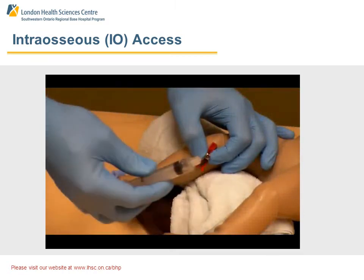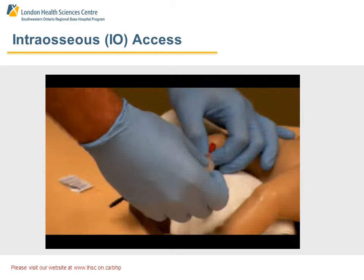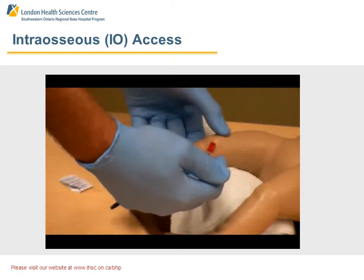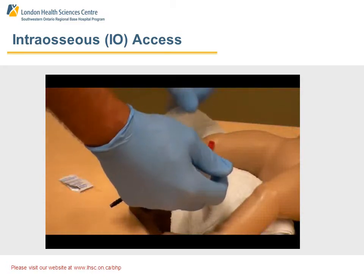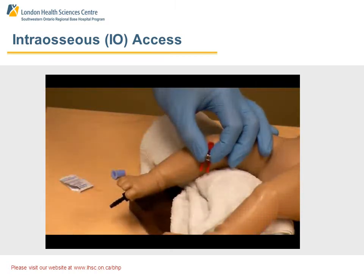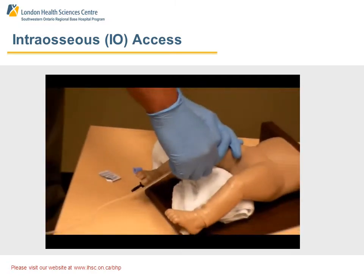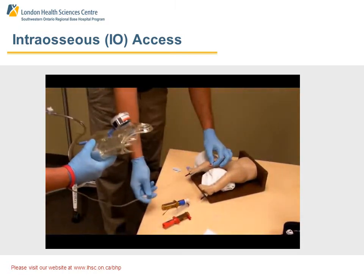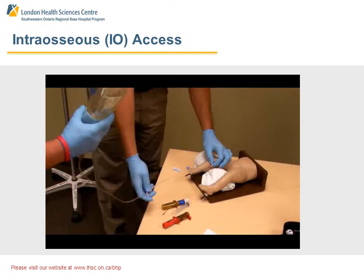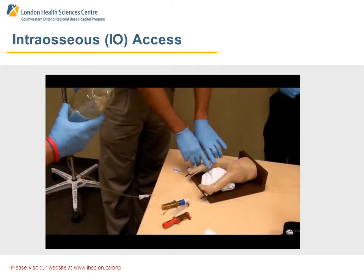Take the red firing pin and use it to secure the needle. With a twisting motion, remove the trocar. Take a 10 cc syringe with 5 cc's of fluid, attach it, pull back to get marrow, then push the fluid in to ensure it's in the proper location. Attach the IV line and run fluid with up to 300 mmHg of pressure behind it. Secure the red firing pin with two pieces of tape, one on each side. That is the big gun.